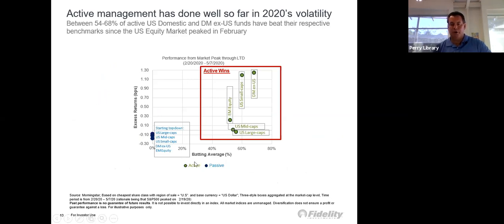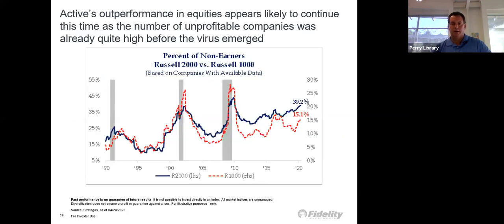The active winners are the emerging markets equities, U.S. small caps, and the domestic markets ex-US. And what that would be are countries like Japan, companies like Germany, companies like France. What has not done so well are the U.S. large caps and the U.S. mid caps.